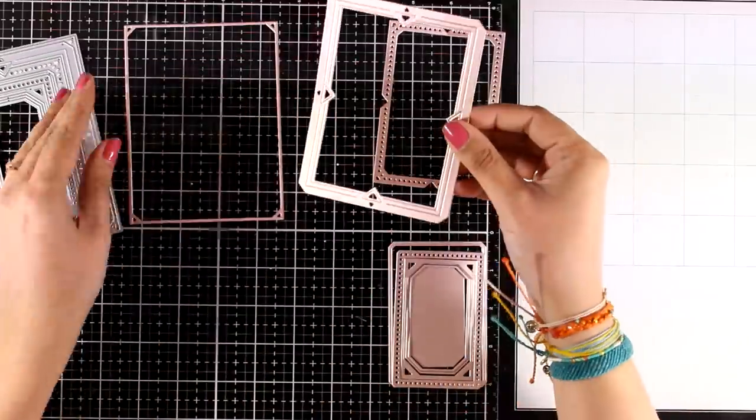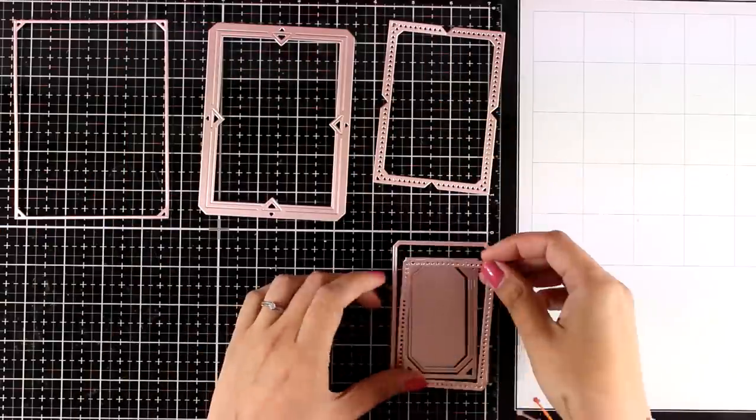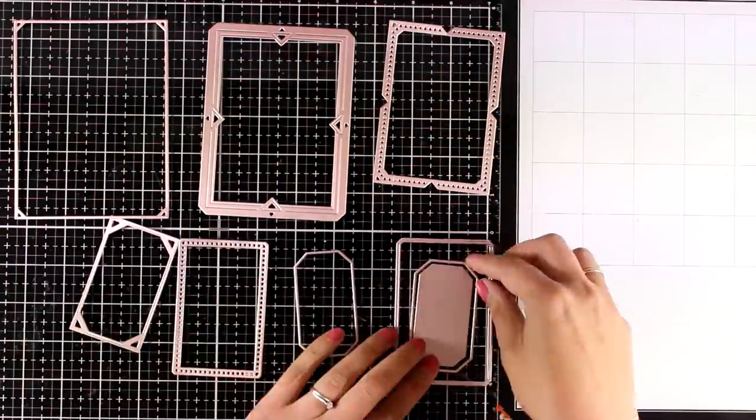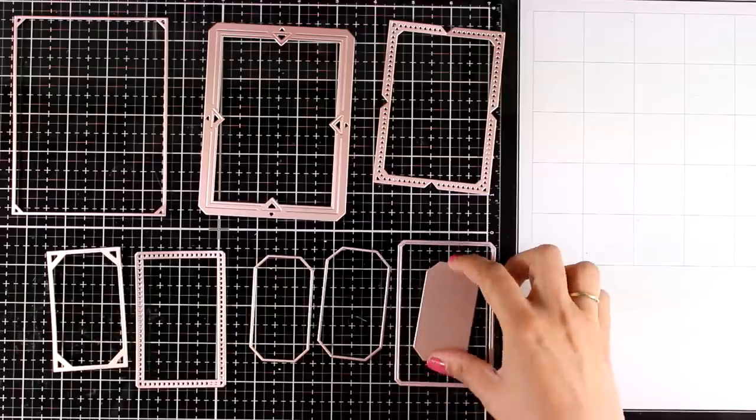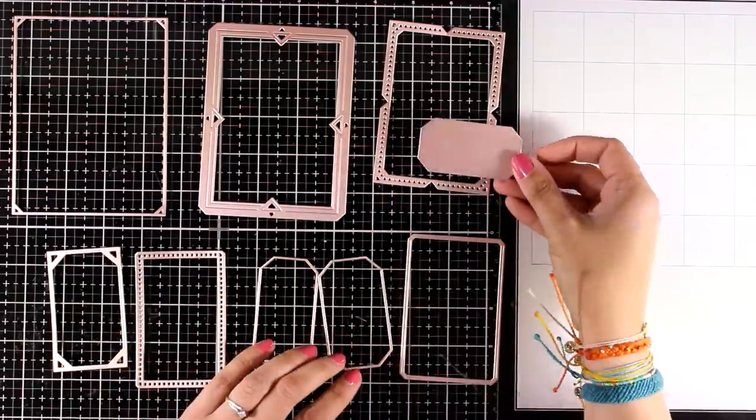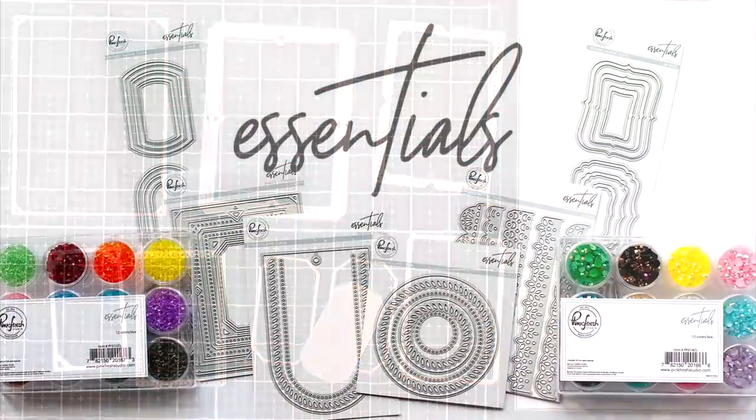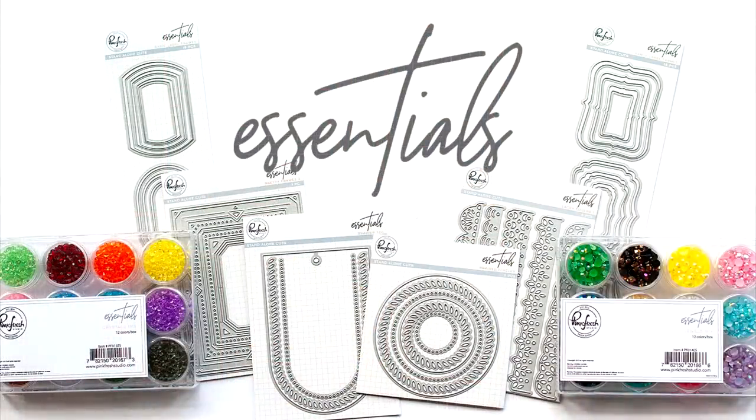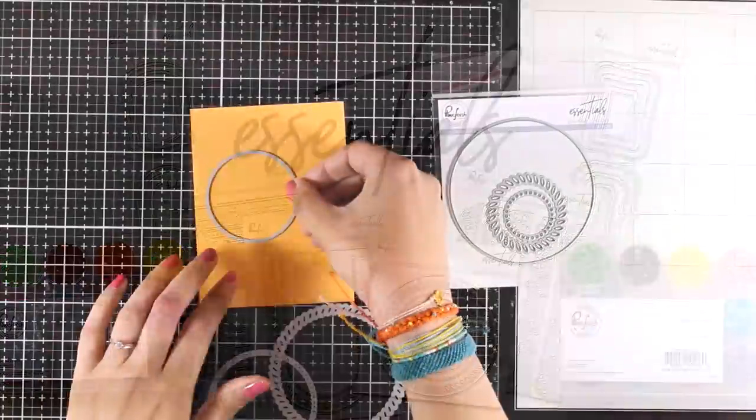Just so you get an idea of what this die cuts out - once you run it through your die cutting machine, you'll end up with all those different frames that you can use to nest inside your focal points or to stamp inside your sentiments. So many different options here.